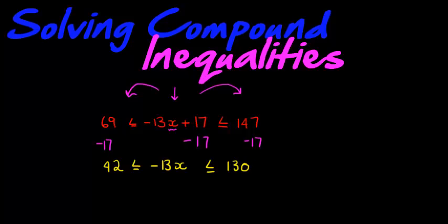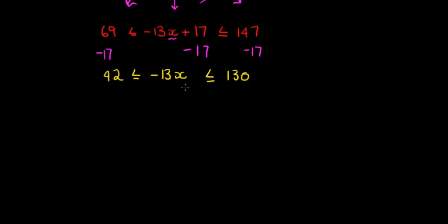The next thing we are going to do is divide with the negative 13. Now usually what we do is we just divide by negative 13 everywhere. The problem is the moment we divide with negative 13, I must swap the two sides around.